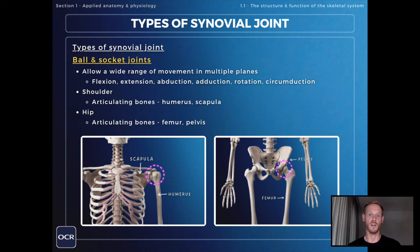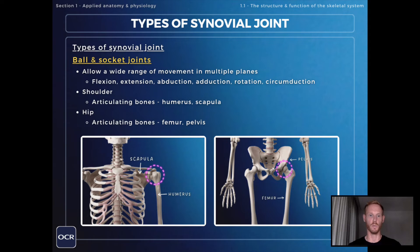The other type of synovial, or freely movable, joint that you need to know about is ball and socket joints. These allow a wide range of movement in multiple planes — so flexion, extension, abduction, adduction, rotation, and circumduction.